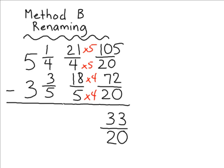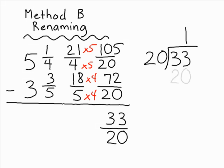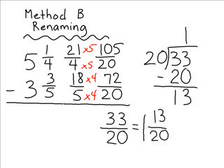Now 33 over 20 is an improper fraction, and we cannot leave our answer in an improper format, so we are going to change that into a mixed number. To change any improper fraction into a mixed number, we can use division. 33 divided by 20 is one whole with a remainder of 13. The remainder becomes your numerator and the divisor of 20 will be your denominator. So 33 twentieths is the same thing as 1 and 13 twentieths. And that is how you subtract two mixed numbers using the renaming method.